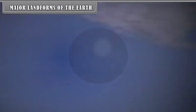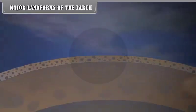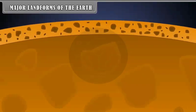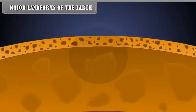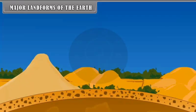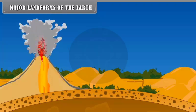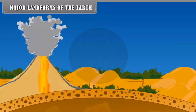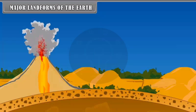Major Landforms of the Earth. The crust of the earth is made up of rocks. This crust is neither permanent nor stable. Due to the tectonic forces, the earth's crust is continuously changing, but the change is very slow. Earthquakes and volcanic eruptions bring abrupt changes on the earth's surface. All these changes on the earth's crust give birth to different types of landforms.